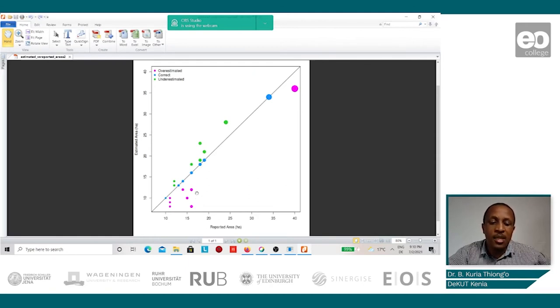The ones indicated in purple show that the reported area by the farmers was overestimated compared to the estimated area from the satellite images. This could be attributed to the fact that when farmers report the area of their farms, they only report the actual size of the farm and not what is under agriculture. The area reported may be large, but the area under cultivation is just a fraction of what is reported.